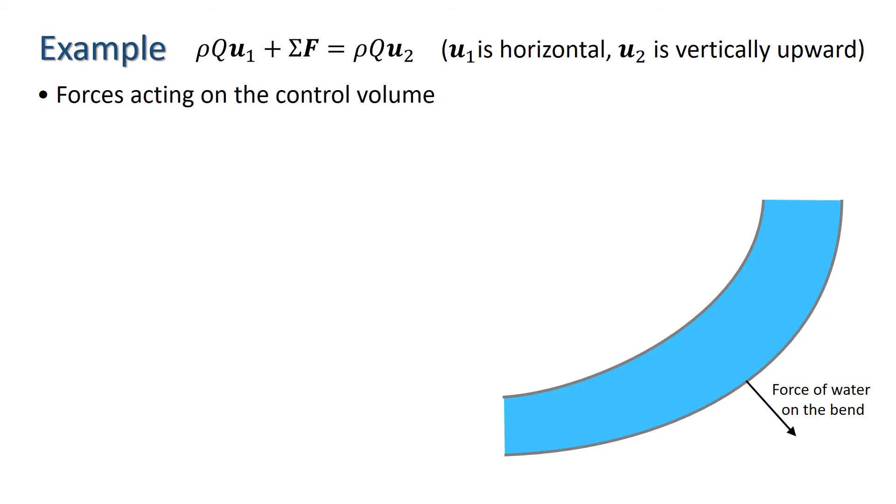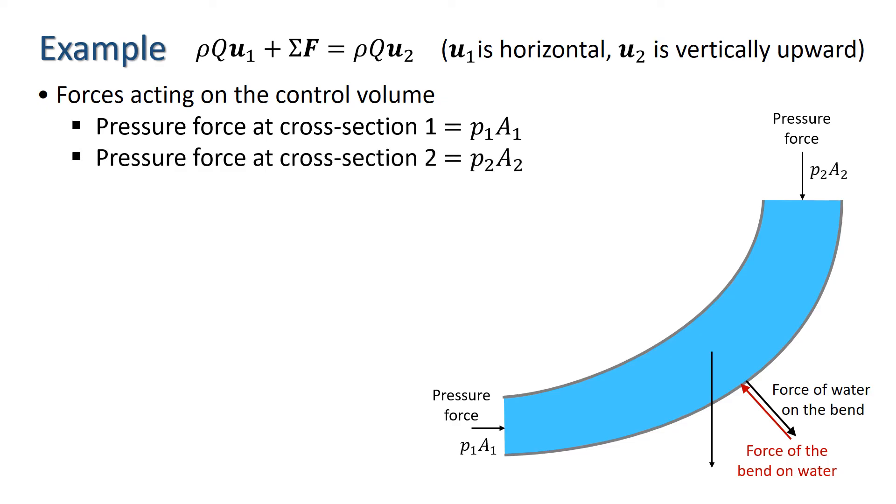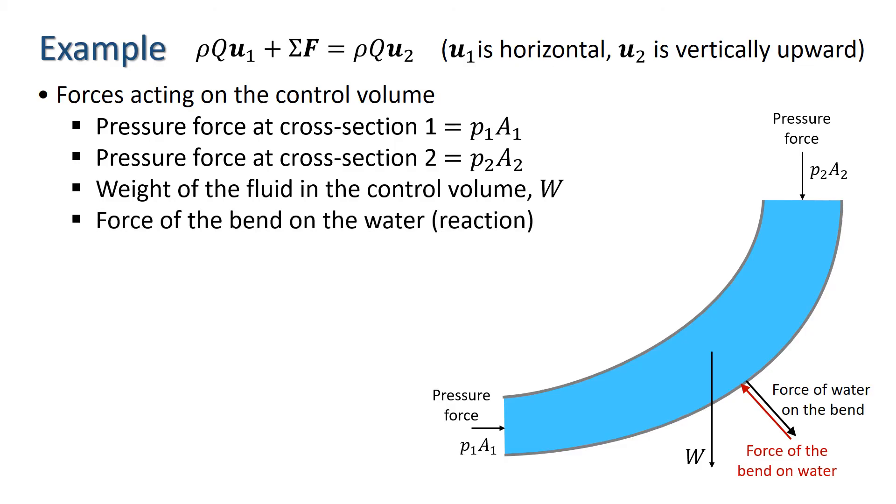The forces acting on the control volume are the pressure forces, the weight of the fluid in the control volume is W and the force of the bend on the water. At cross section 1 the pressure force is P1 A1 and at cross section 2 the pressure force is P2 A2. I'll denote the weight of the fluid in the control volume as W and finally we have the force of the bend on the water.